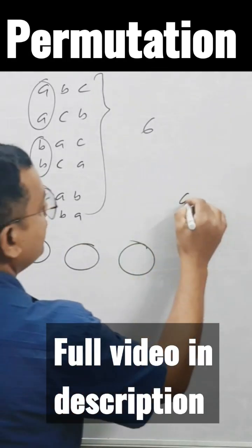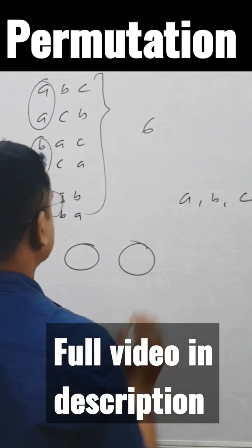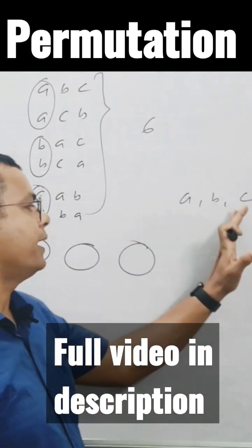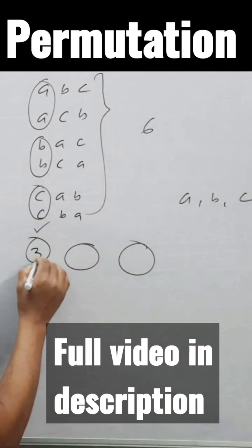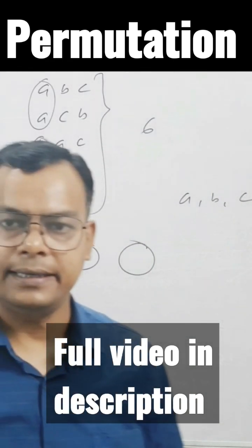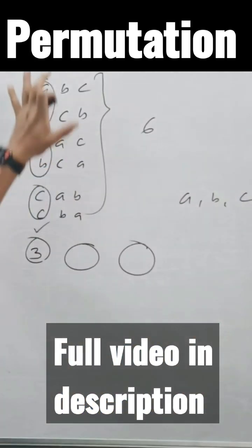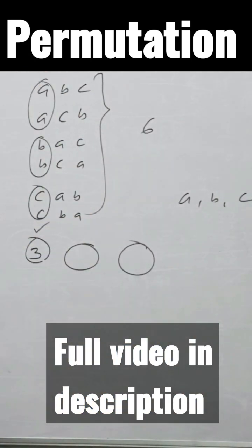We have A, B, and C. The first place can be occupied by any one of them. That means three ways, right? But look here, I did not take any numbers more than...